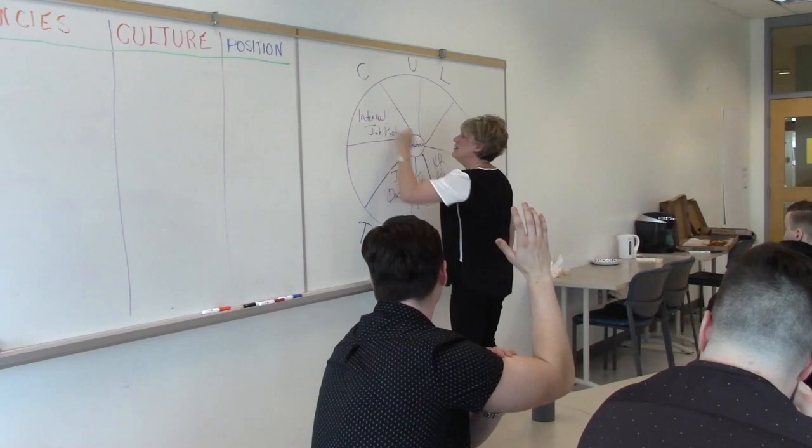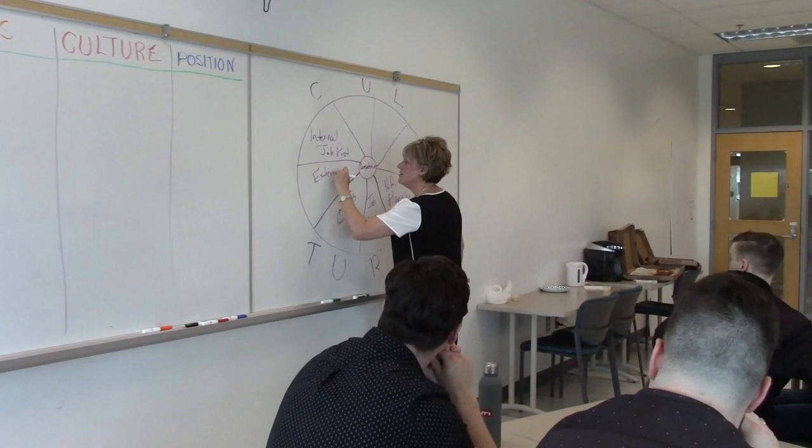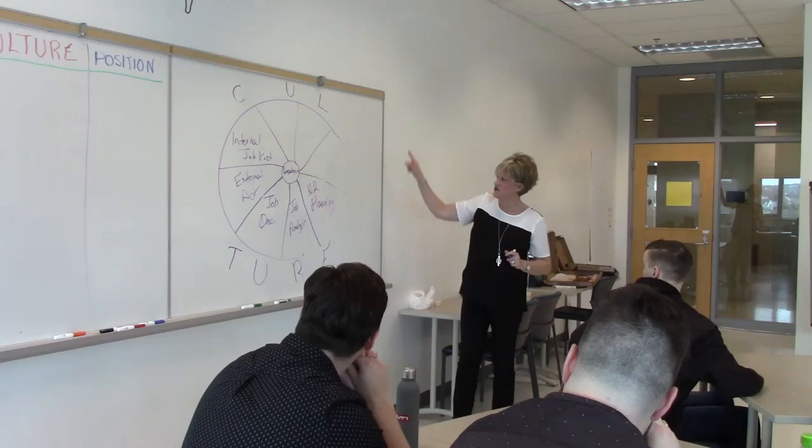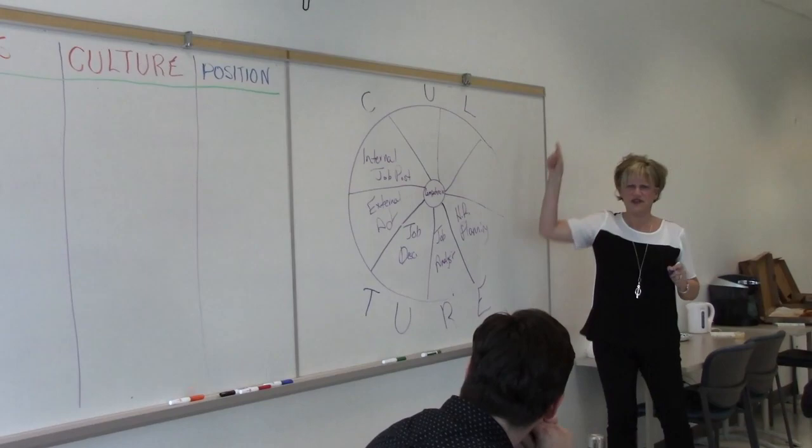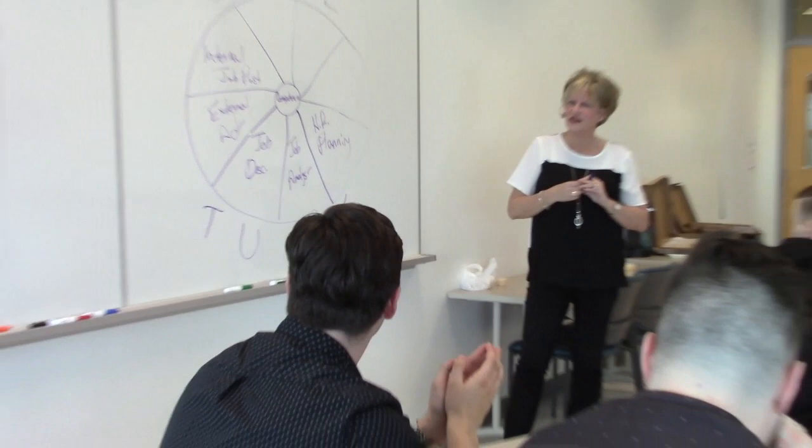Some of you have probably noticed that outside the circle, if you can see the letters, it actually spells culture. Why do you think I have culture around the outside of the circle? Because all aspects involved in the circle need to be fitted towards the culture of the organization. Yeah, and if it doesn't fit, then it just won't work overall. If it doesn't fit the culture, it's not going to work.